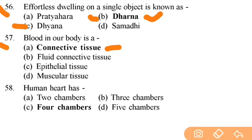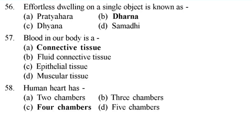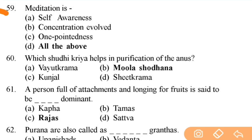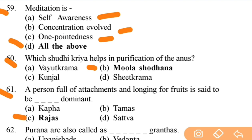Human heart has four chambers. Next: meditation is all of the above — self-awareness, concentration, evolved one-pointedness. Next: which Shuddhi Kriya helps in purification of the anus? Right answer is B — Mula Shuddhi. Next: a person full of attachments and longing for fruits is said to be Rajas dominant — this is the cause of all sorrows and pains.